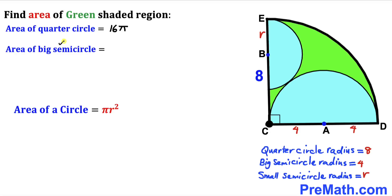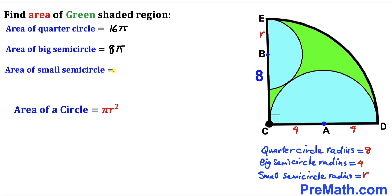Now let's calculate the area of the larger semicircle, whose radius is four units. Its area is pi times four squared divided by two, which equals 16 pi divided by two, giving us 8 pi. The area of the smaller semicircle is pi r squared divided by two, where r is its radius.